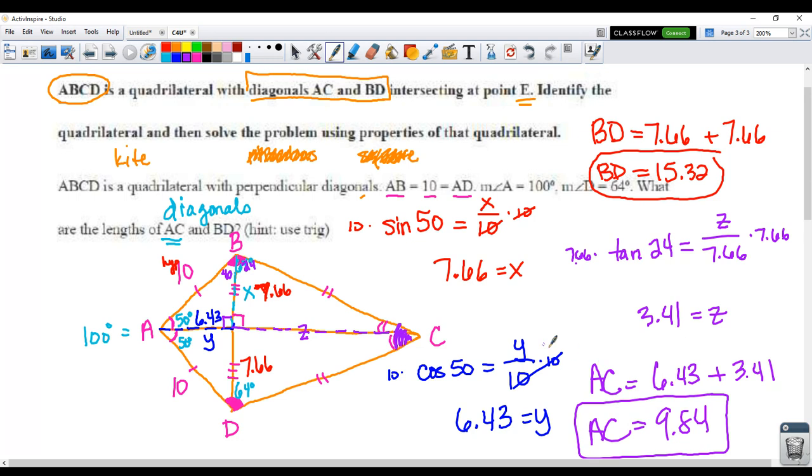As long as you know one angle and one side of a right triangle, you can use trigonometry to find the length of the other side. Sine is the opposite over the hypotenuse. Cosine is the adjacent over the hypotenuse. And for this reference angle of 24, tangent is z the opposite side over 7.66 the adjacent side. And that's how you find the lengths of your diagonals.